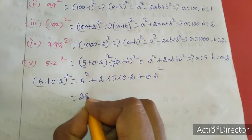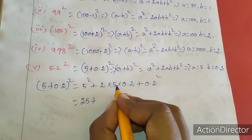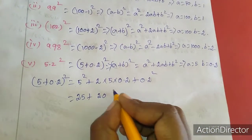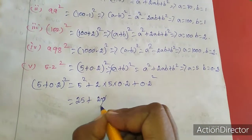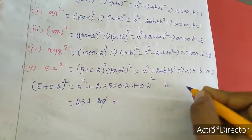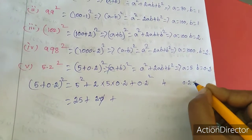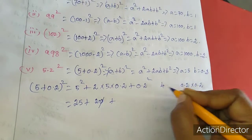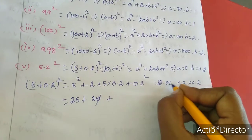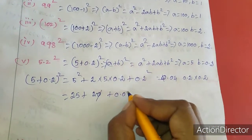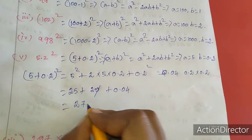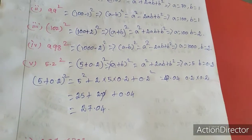5 squared equals 25. Then 2 into 5 into 0.2: 2 times 5 is 10, 10 times 0.2 is 2.0, so that gives 2.0. Wait — 10 into 0.2 gives 2, but accounting for digits, that is 0.4... actually 2 times 5 is 10, times 0.2 is 2.0. And 0.2 squared: 0.2 times 0.2, 2 twos are 4 with 2 digits after the decimal, so 0.04. Adding: 25 plus 2.0 plus 0.04 equals 27.04. This is the answer for the 5th sum.